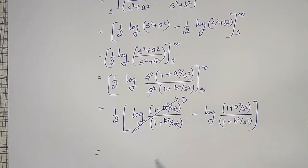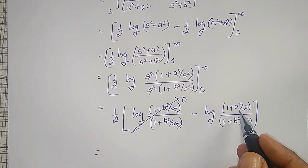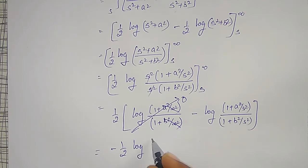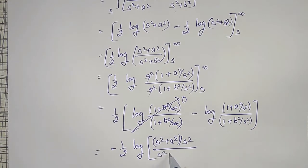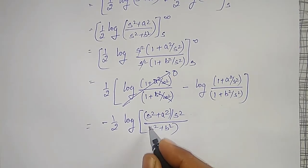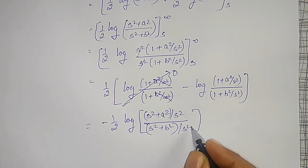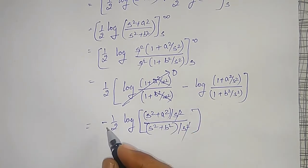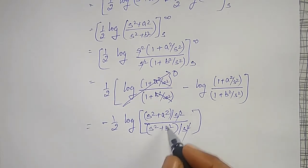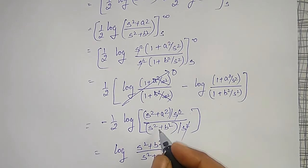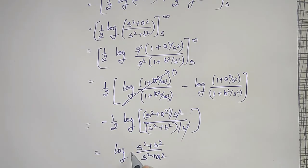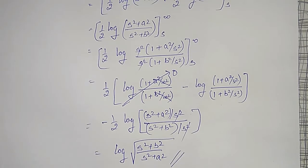Due to the minus sign, this becomes minus 1/2 log of (s squared plus a squared divided by s squared plus b squared), which after taking LCM gives s squared plus a squared over s squared, divided by s squared plus b squared over s squared, and s squared cancels. Due to the minus sign it becomes reciprocal, so we get log of s squared plus b squared divided by s squared plus a squared, and due to the 1/2 it becomes square root. This is the required answer.